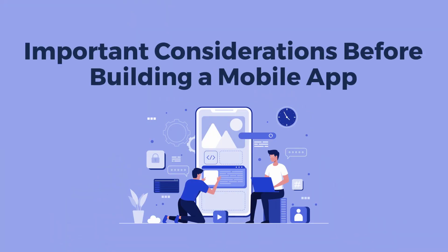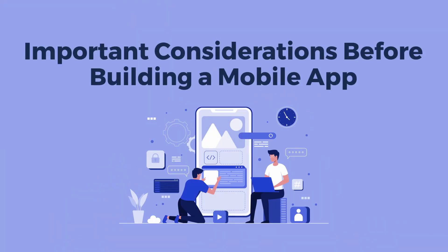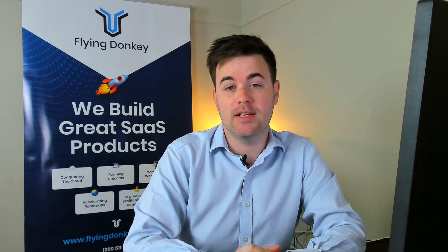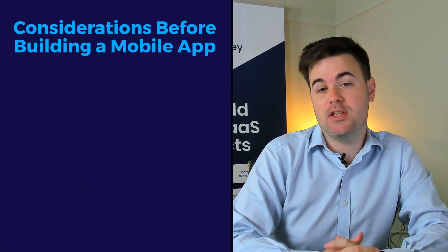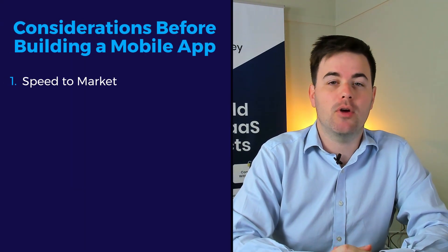Let's look at a few considerations for building a mobile app and how they relate to native app development. Firstly, speed to market: generally speaking, if you're targeting both Android and iOS, building two native apps is going to take longer, so we'd suggest either a hybrid or cross-platform approach. But if you're concentrating on one platform, building a native app is only going to take slightly longer than building in one of the other paradigms.